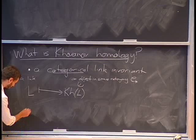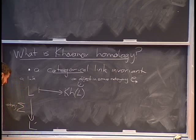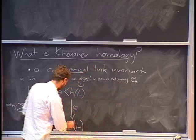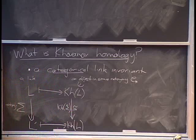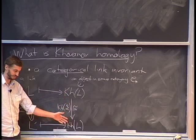What does this mean? Well, this means that if we have some link, we associate to it kH of the link, and we're going to think of this as an object in some category, which today I'm going to call C-star. Not only do I get objects in this category for both L and L-prime, but I get an isomorphism in this category C-star associated to the isotopy.